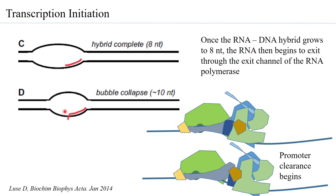This is what is called bubble collapse, and this bubble collapse is observed when the RNA is about 10 nucleotides long. At this point, the RNA has also started entering the exit channel.